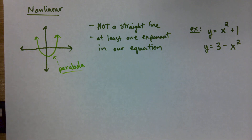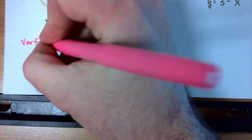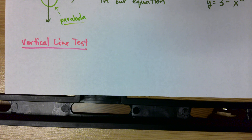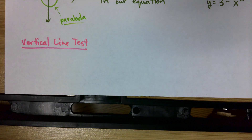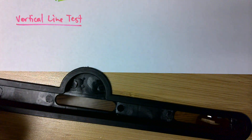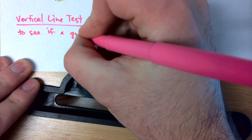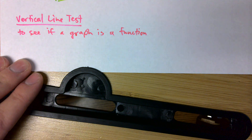Let's go ahead and write this last thing. It is called the vertical line test. It's a very simple test to do — not as hard as the tests I give you, I promise. All we're going to do is — well, let's go ahead and just write it down and then we'll talk about it.